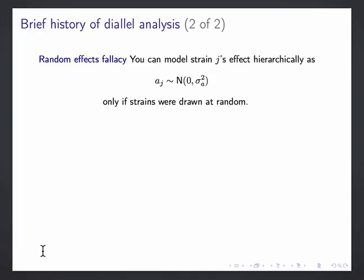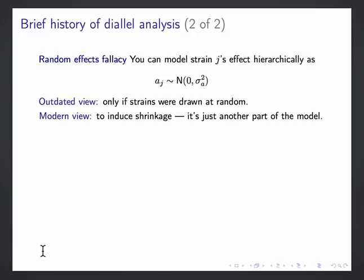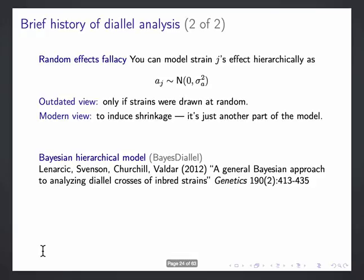is what I sometimes refer to as the random effects fallacy, which is this idea that you can only model strain effects hierarchically, that is as random effects, if you can faithfully make the argument that the strains were drawn at random. That's sort of, statistically, that's very outdated thinking. And the modern view is, of course, you can make parameters modeled as if they're drawn from normal distributions. You do so to induce shrinkage. It's just another part of the model.